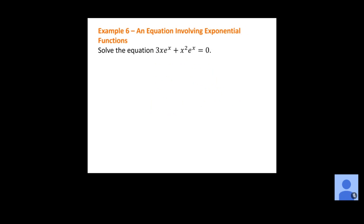Now we've got 3x e to the x plus x squared e to the x equals zero. I've got two terms, both with x in the exponent. The first step is to see if I can factor. There's a common factor between the two terms: e to the x is what they share, so I factor that out. I also notice there's an x in common, so I can factor out an x as well. That leaves us with e to the x times x times the quantity 3 plus x.